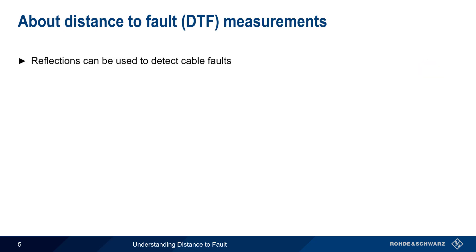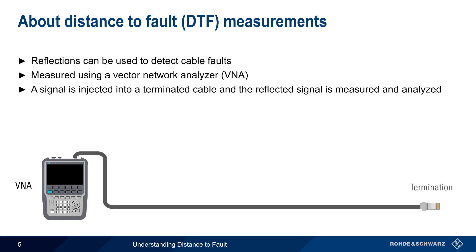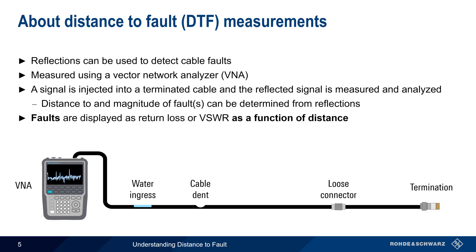These reflections can therefore be used to detect cable faults. This is done using an instrument called a Vector Network Analyzer, or VNA. Since this measurement is often made in the field, portable or battery-powered VNAs are most commonly used. A signal is injected into a terminated cable under test, and the resulting reflections are measured and analyzed to determine both the distance to, as well as the magnitude of, any faults along the cable. These faults are displayed in terms of return loss or VSWR as a function of distance, and therefore this measurement is referred to as distance to fault.